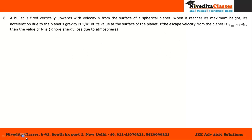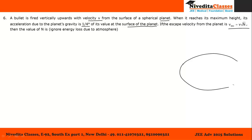Moving to the next question: we have fired a bullet with velocity v in the upward direction from a planet. When it reaches its maximum height, its acceleration due to the planet's gravity becomes 1/4 of the value on the surface. Let us draw the figure — the planet has radius r, the bullet is launched with initial velocity v, and it reaches a maximum height of small h.